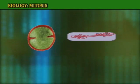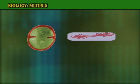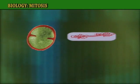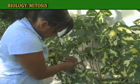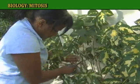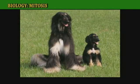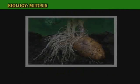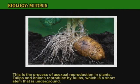Asexual reproduction may happen by binary fission, vegetative propagation, and cloning. This is the process of asexual reproduction in plants.